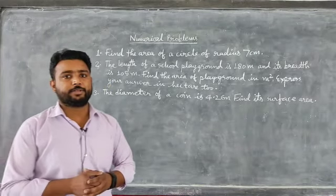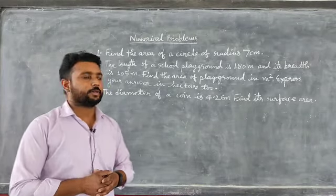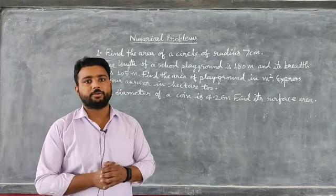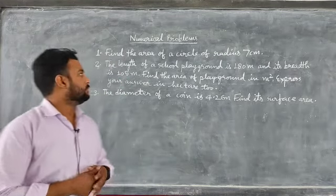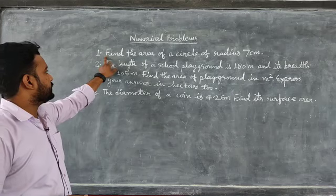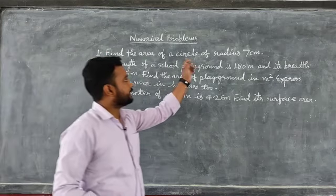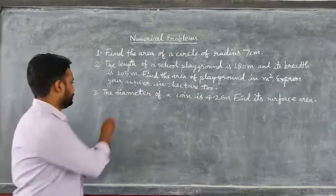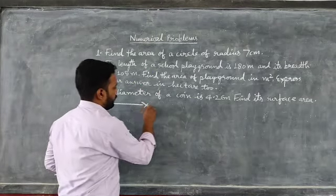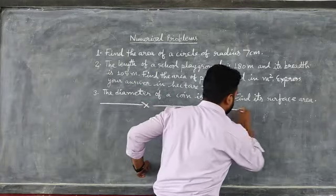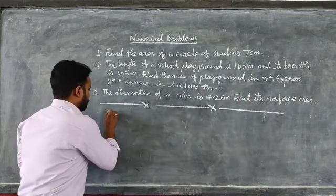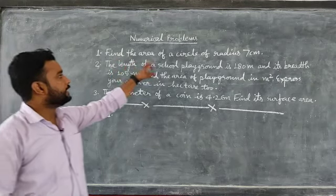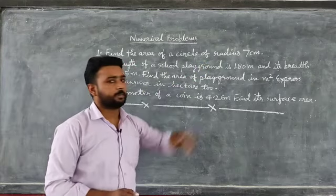Today in this session we will discuss numerical problems based on area and volume. Question number 1: Find the area of a circle of radius 7 cm.